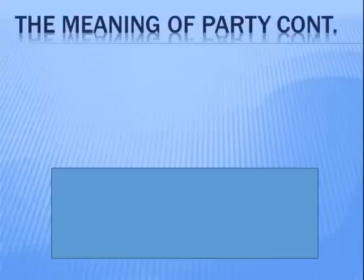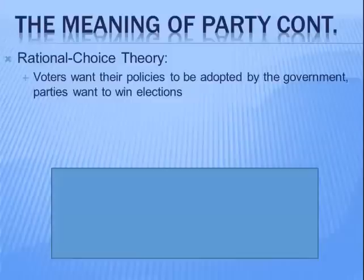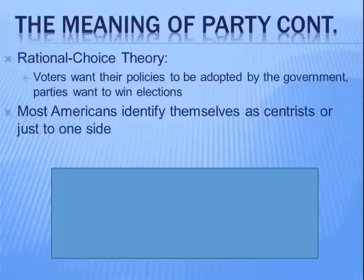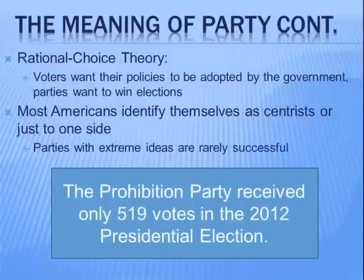Let's go to rational choice theory, which states that voters want their policies to be adopted by the government and parties want to win elections. Under this theory, parties will do their best to adopt policies that voters want — it doesn't always work out that way, but that's the idea. Most Americans identify themselves as centrist or just to one side or the other of the middle, so most Americans don't see themselves as extreme conservatives or liberals; rather, they see themselves as moderates.